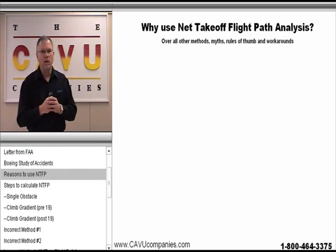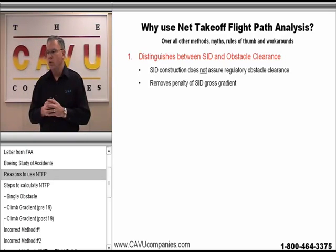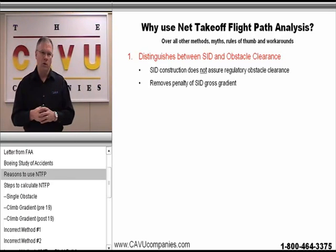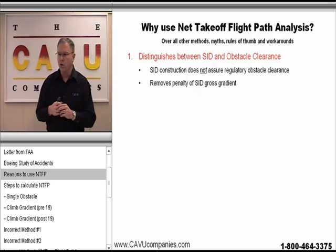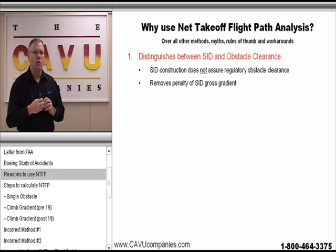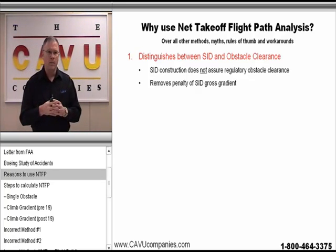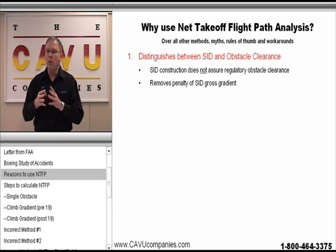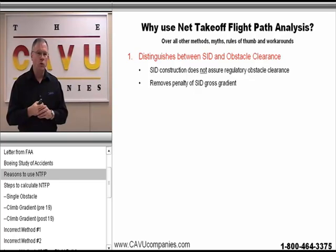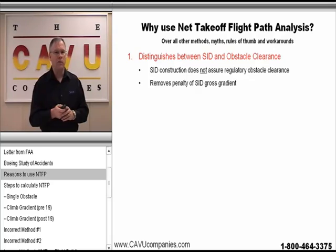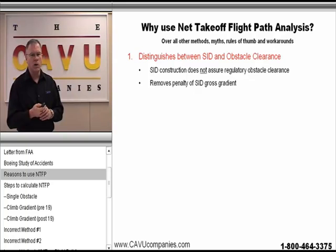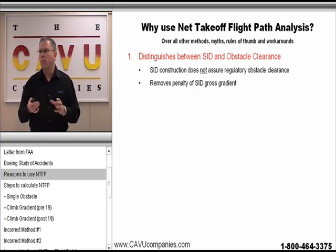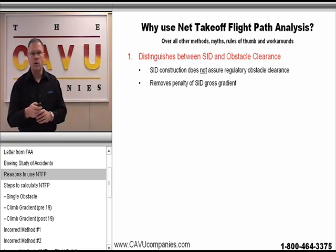The net takeoff flight path allows you to distinguish between SIDs — which are based on all engines operating — and an obstacle clearance or a single known obstacle clearance. The SID construction does not in itself assure regulatory obstacle clearance. So you have to modify the SID to allow you to comply with the 135 requirements of clearing the obstacles on a 35-foot net path. You also want to remove the safety margins built into the SIDs because your net takeoff paths will basically add those margins back in.